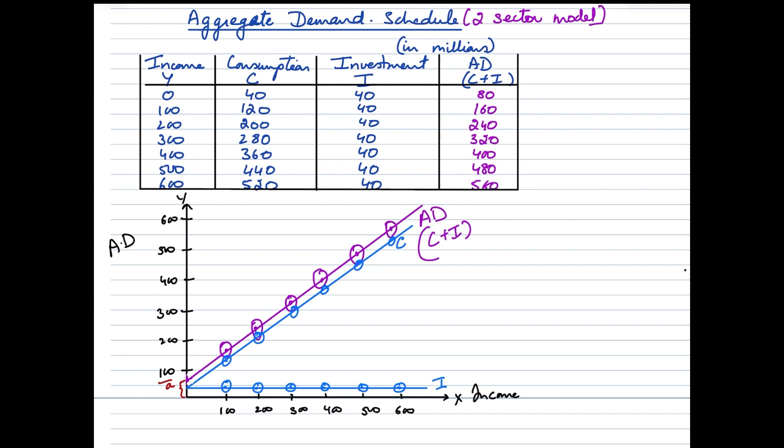Now when we take a look at aggregate demand, this is the purple curve that we see here. I've also labeled it as AD. Now this aggregate demand curve and the consumption curve, which is in blue, which is labeled here, are running parallel to each other. We can see it very evidently. The difference or the vertical distance between these two curves, between aggregate demand curve and the consumption curve virtually is representation of the investment, which is constant at 40 and hence you see the parallel running of these two curves.